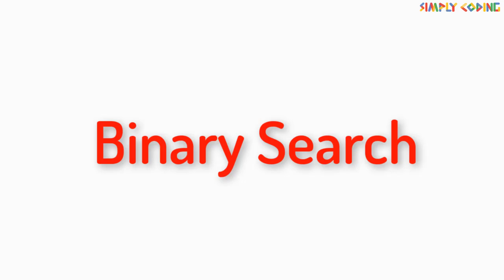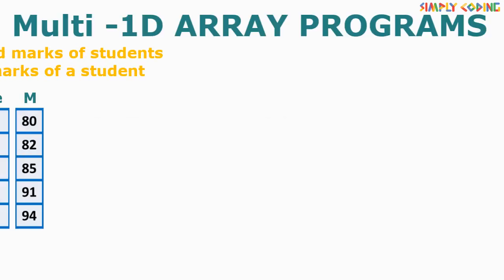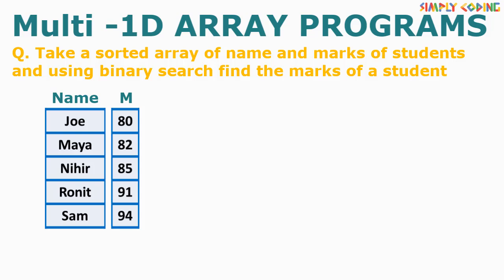Next we will do binary search, where we have a sorted array of names and marks, and using binary search we find the marks of a given student name. We have two arrays for name and marks, and we declare a variable to store the index where we find the name, initialized to minus one — not zero — since array indices start from zero.